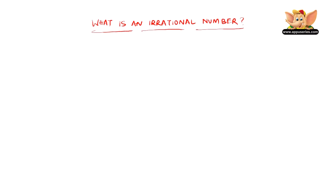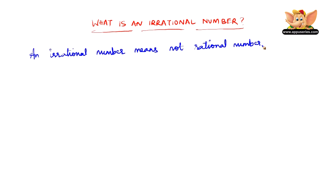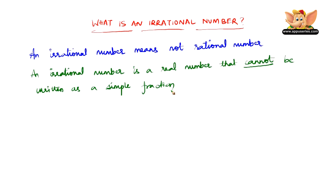Let us see what is an irrational number. An irrational number means not rational number — that's the most basic meaning of the word irrational. An irrational number is a real number that cannot — let me highlight this word — that cannot be written as a simple fraction.